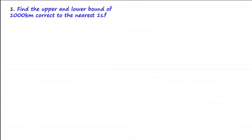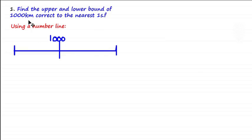Find the upper and lower bound of 1,000 kilometers correct to the nearest one significant figure. Note that 'correct' simply means rounded. Using a number line with 1,000 in the middle, we need to find the next values up and down. Rounded to the nearest one significant figure, we identify the first significant figure, which is 1.